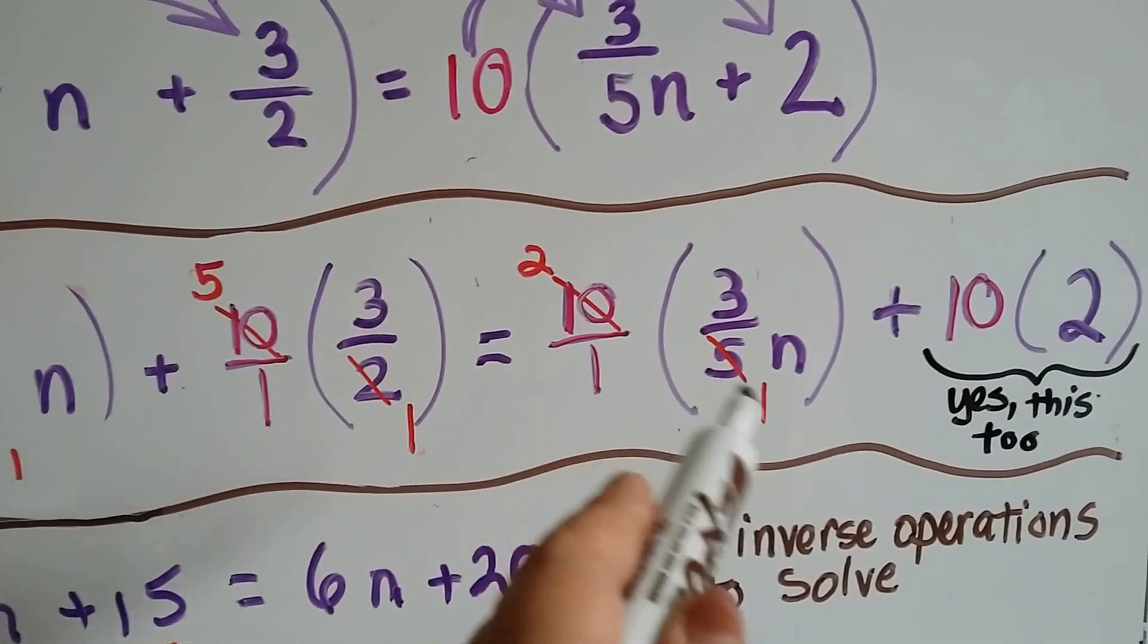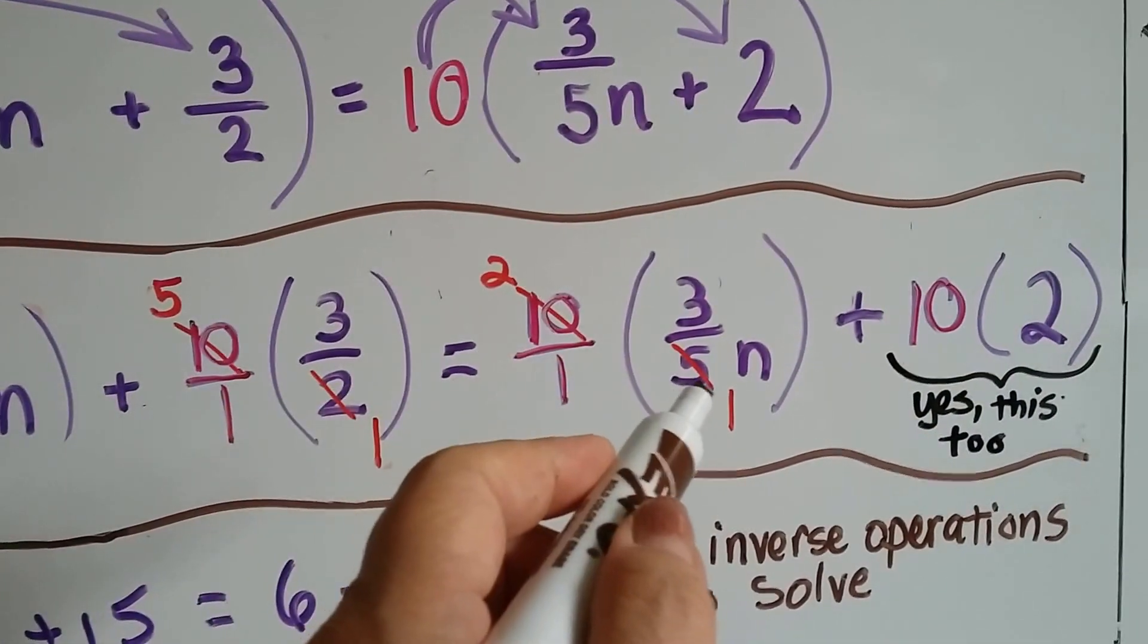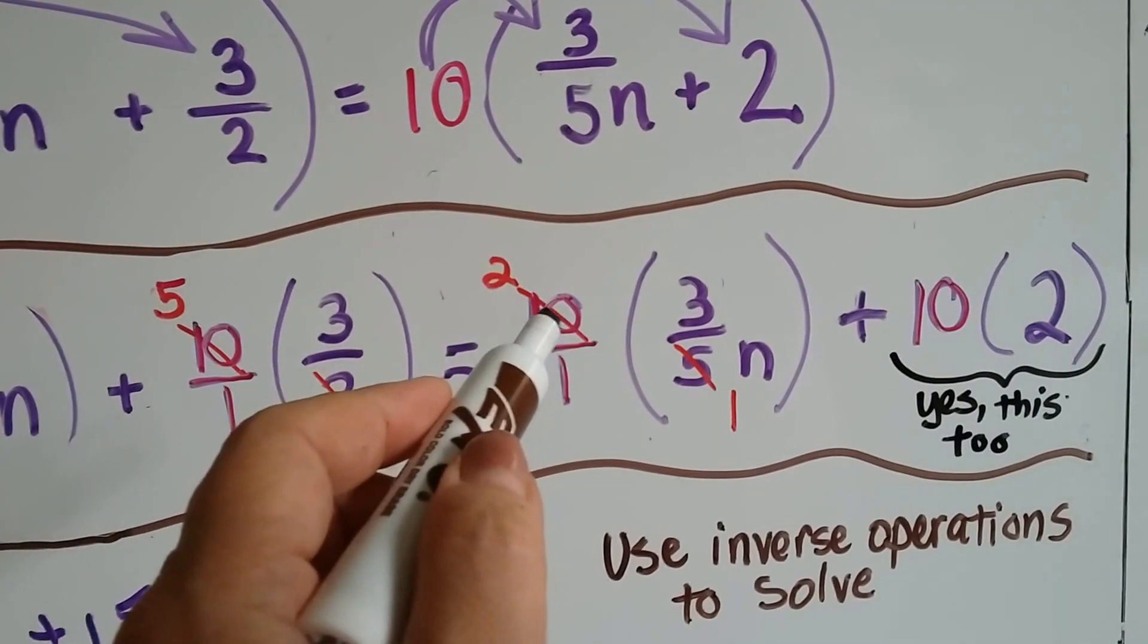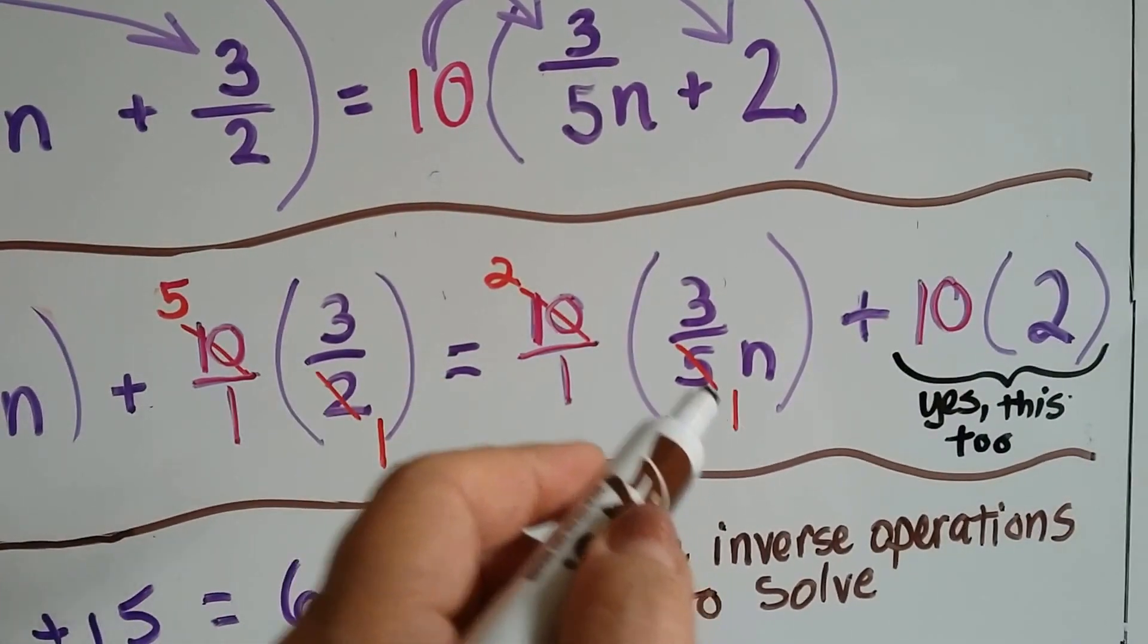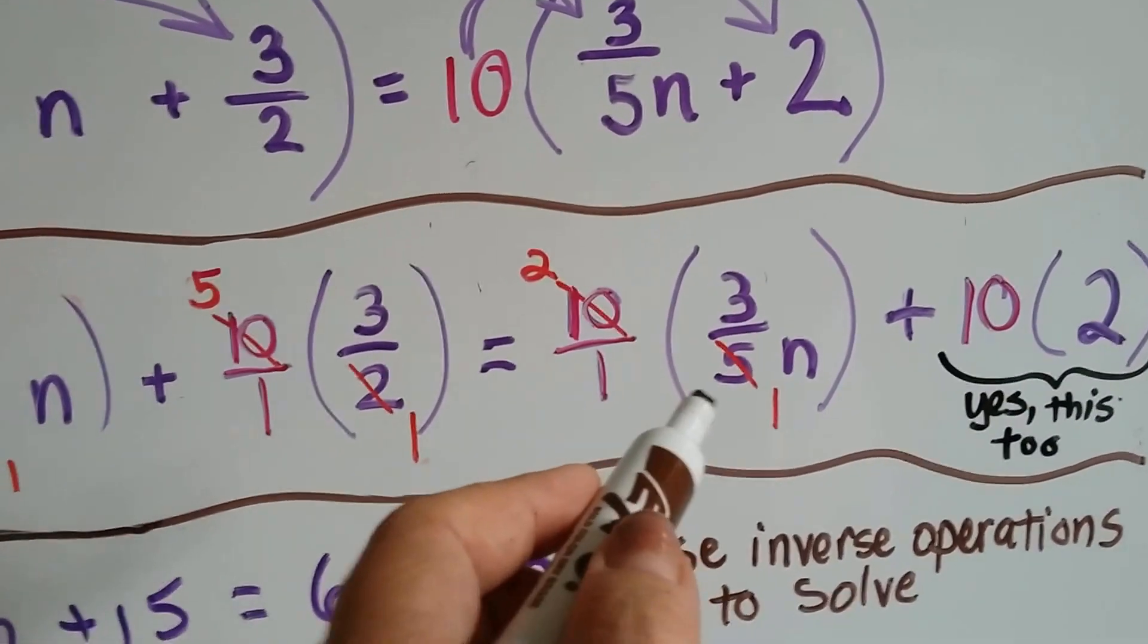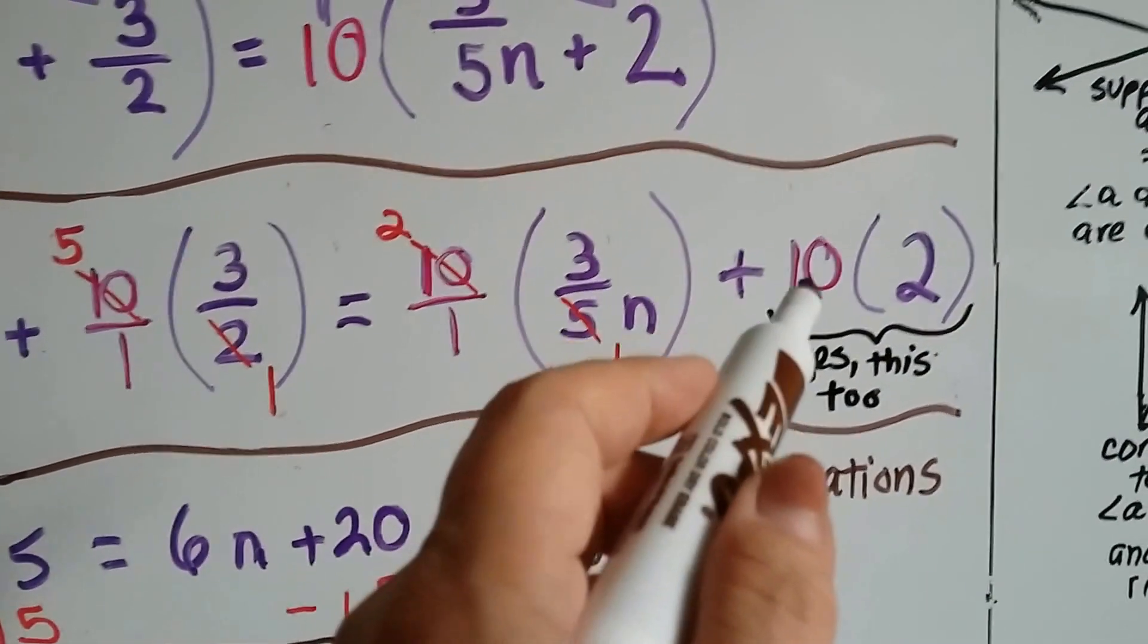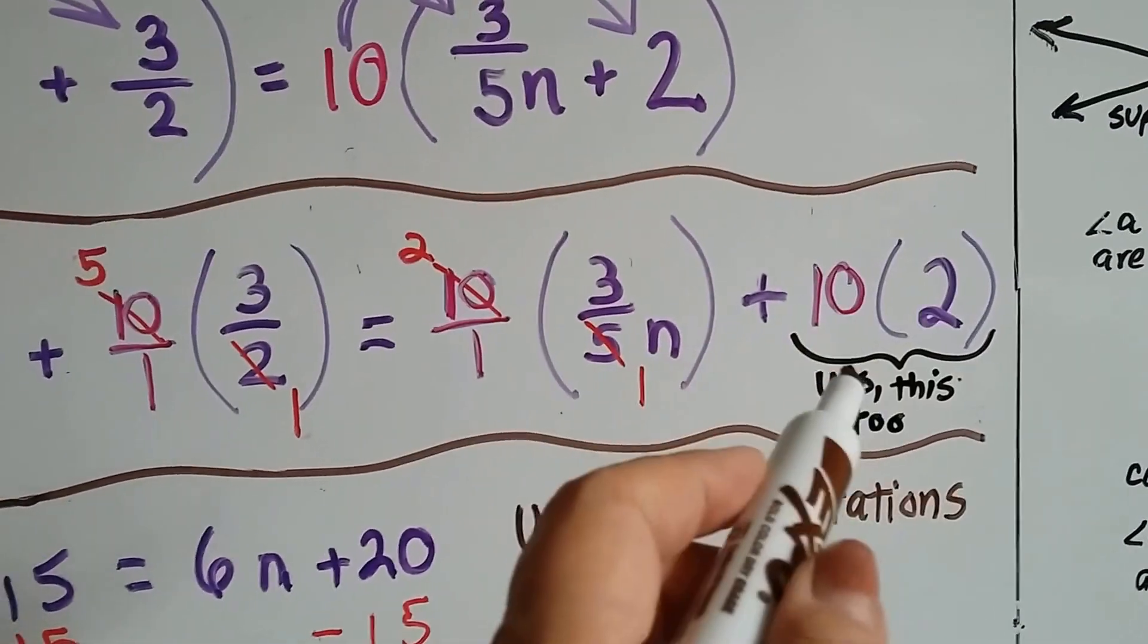Now we have to multiply the 3 fifths n by 10 over 1. So this 5 cancels out as a 1 and the 10 cancels out as a 2. 2 times 3 is 6 over 1 times 1 is 1. 6 over 1 is 6n. And we've got to do this 1 times 10 also. 10 times 2 is 20. So now we have a plus 20.